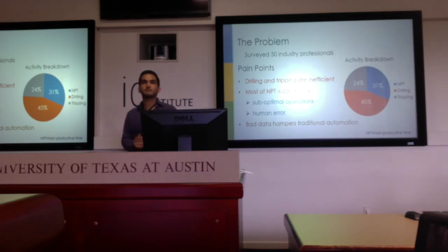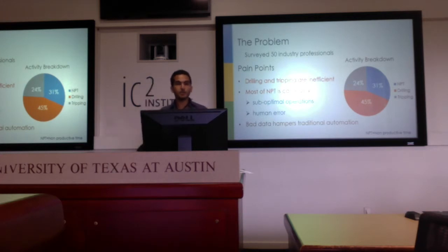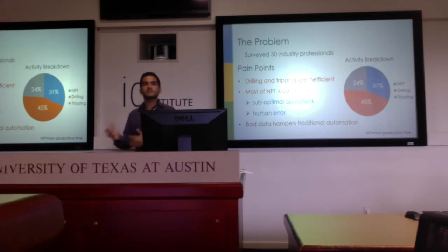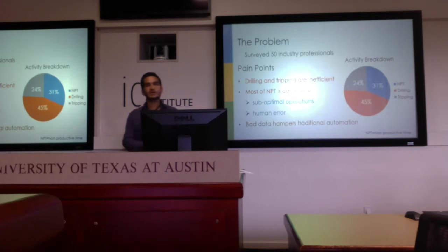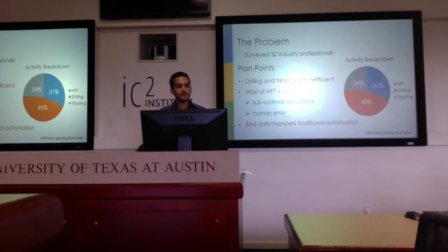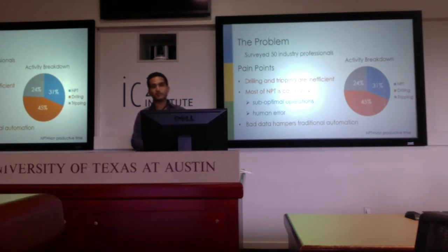But why hasn't automation completely happened yet, given all the resources being invested in oil and gas? What we found is that automating the drilling process is actually very different from traditional automation in things like car manufacturing. There are multiple stakeholders involved in drilling a wellbore, and the processes are always time-varying and changing — unlike a car plant where the process is the same for every car. From a bigger perspective, bad data — whether from sensors or from people — hampers traditional automation.